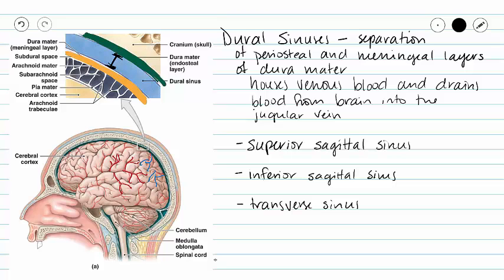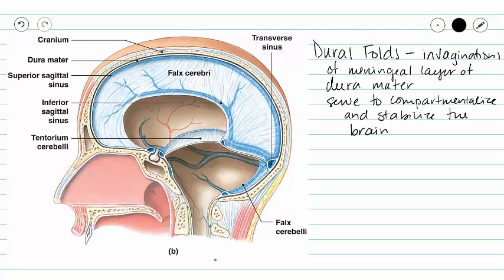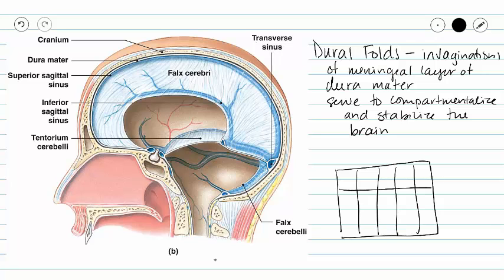Dural folds are invaginations of the meningeal layer of the dura mater that serve to compartmentalize the brain into sections, preventing extraneous movement of the brain from side to side or front to back. In this way, our dural folds act like packaging material inside our cranium — similar to the cardboard inserts in a box that protect glasses from moving and bumping into each other.